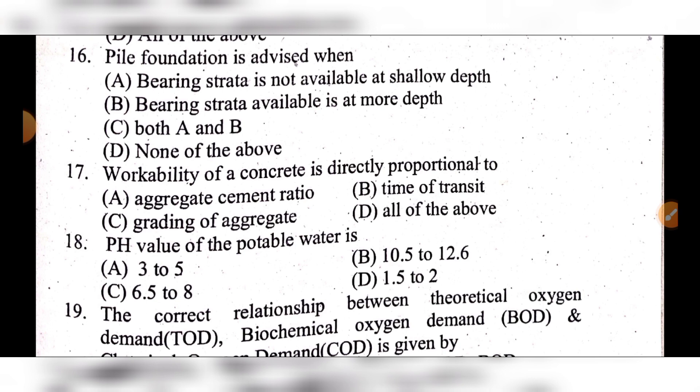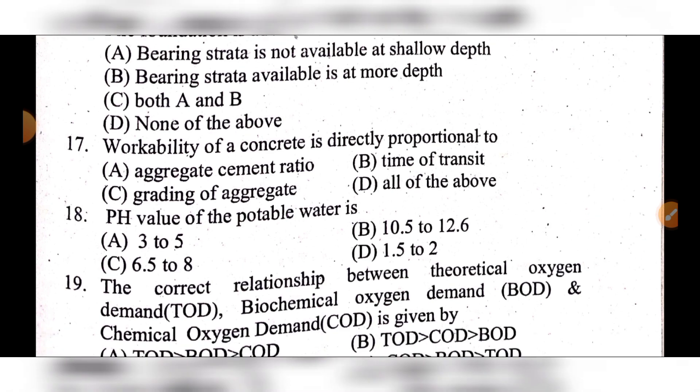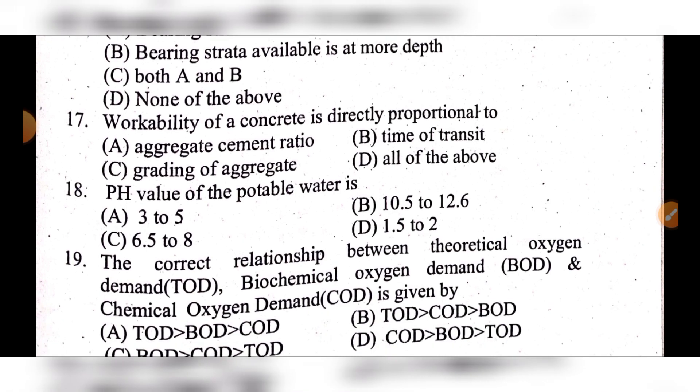Question 17: Workability of concrete is directly proportional to — option A: aggregate cement ratio, option B: time of transit, option C: grading of aggregate, option D: all of the above. The answer is option C: grading of aggregate.